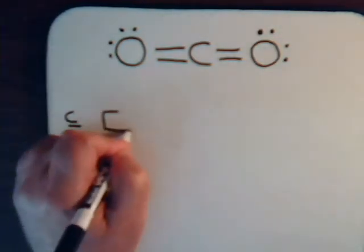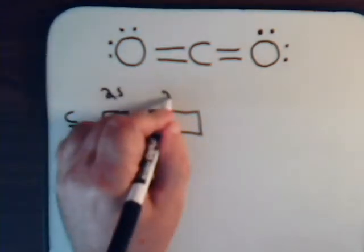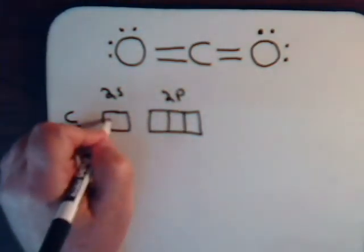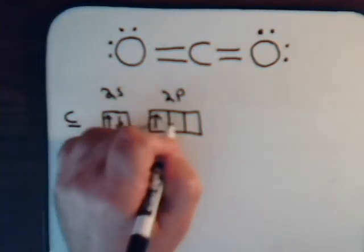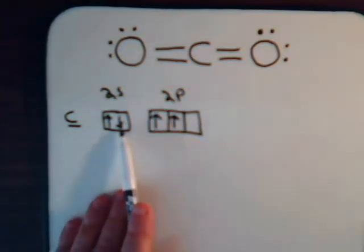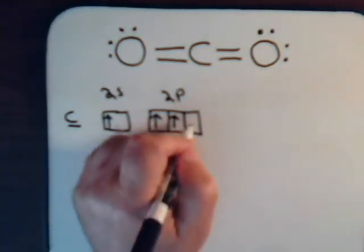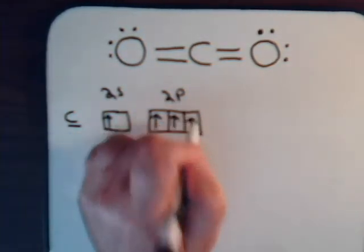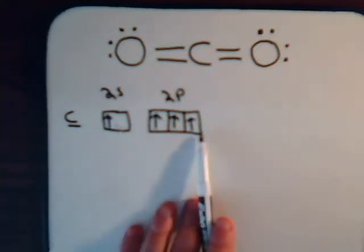Carbon has two electrons in the 2s orbital and two electrons to contribute to the two p orbitals. This one is empty. The first thing that happens is one of these electrons from the s orbital gets promoted up to the p orbital. That takes energy, but as a result, we can now form a chemical bond, and that more than compensates for the energy required to do the electron promotion.